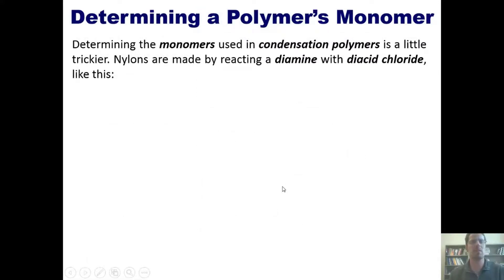So to determine the monomers that are used in a condensation polymer, it's a little bit trickier. Nylons are made by reacting a diamine, shown here, with a diacid chloride, shown here. Here's what happens. A diamine is any molecule that has two amines in it. Amines are NH2 groups. And a diacid chloride, an acid chloride is something that has a carbon double bonded to an oxygen with a chlorine coming off of it. A diacid chloride is one that has two of those. These R groups just represent any type of carbon chain in the middle of these two ends.